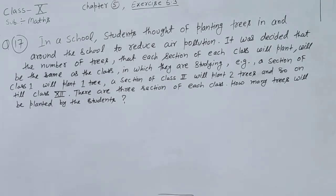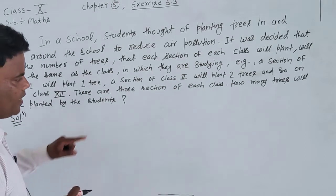The most important thing to understand is that each class has 3 sections, and each section plants a number of trees equal to their class number.